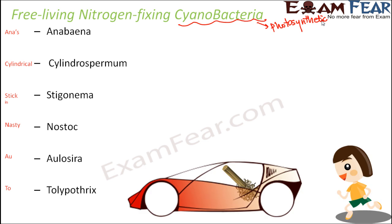In the memory tip, 'Anna' reminds you of Anabaena. 'Cylindrical' reminds you of Cylindrospermum. 'Stick' is Stigonema. 'Nasty' is Nostoc. 'O' is Aulosira. And 'T' is Tolypothrix. This is how you can remember the names of cyanobacteria which fall under the category of free living nitrogen fixers.